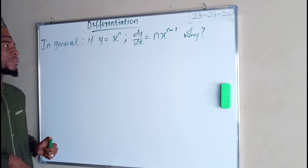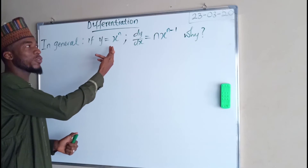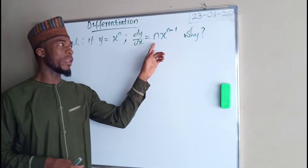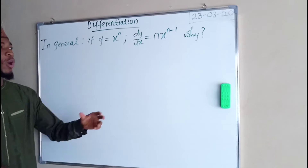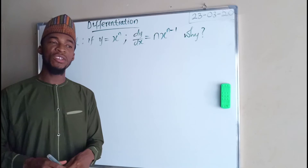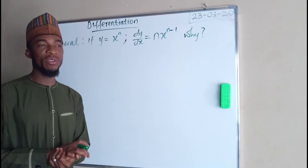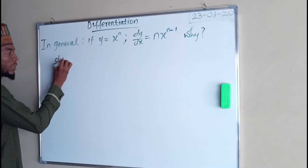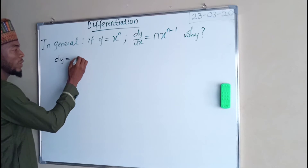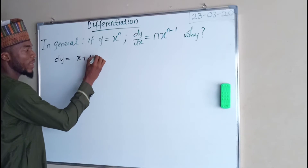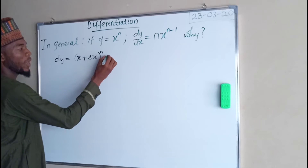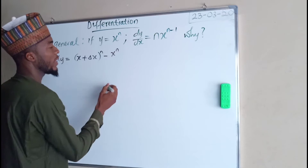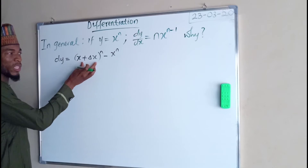In our previous lesson, you have seen that if y is equal to x raised to the power of n, then the derivative of y with respect to x is n times x raised to the power of n minus 1. But why? Every formula used in differentiation is derived from the first principle. If y is equal to x raised to the power of n, then dy will be equal to (x plus dx) to the power of n minus f of x, which is x to the power n. The binomial theorem will help us in expanding this.